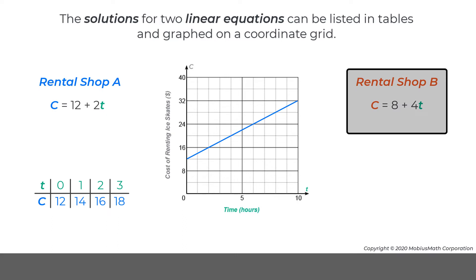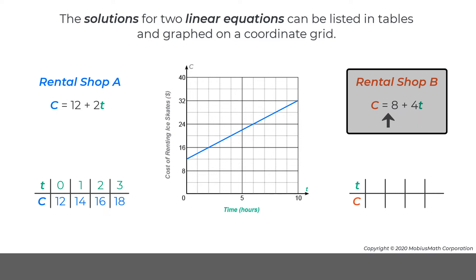Shop B charges an upfront fee of $8 and $4 for every hour that the skates are rented. The cost C of renting skates from Shop B for T hours is represented by the equation C equals 8 plus 4T.